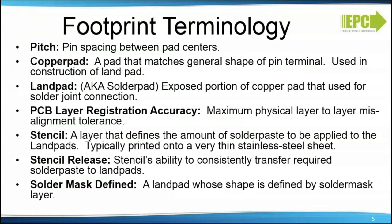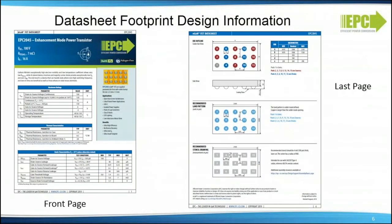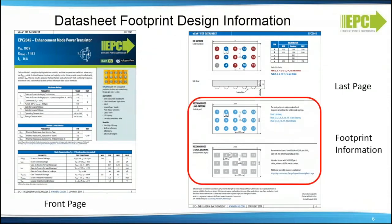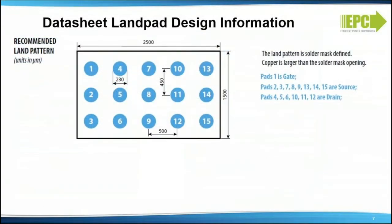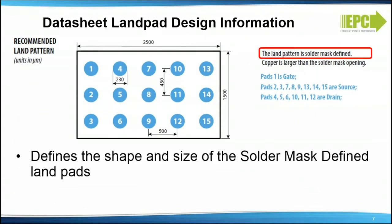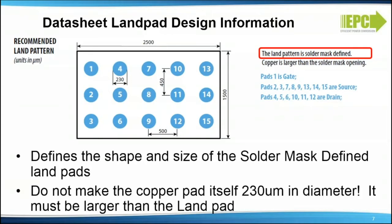Datasheet footprint design information is found on the last page of the data sheet — this is where everything starts. The land pad information is the starting point for the whole footprint design. It defines the shape and size of the solder mass defined land pads, but do not make the mistake that the copper pad itself is 230 micrometers in diameter as shown — it must be larger than the land pad.